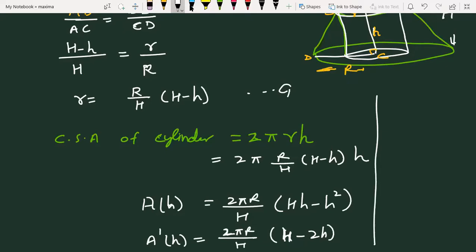Then, for maximum and minimum, let's do it here so that you can see on the screen. So, A'(h) equal to zero. So, here we have H minus 2h equal to zero. So, h equal to H/2.